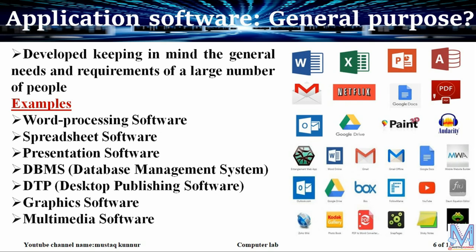General purpose application software is developed keeping in mind the general needs and requirements of a large number of people. Examples include word processing software, spreadsheet software, and presentation software. We use word processing to type letters, MS Excel for spreadsheets, and PowerPoint for presentations. These three come under the MS Office package.